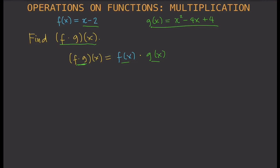How do we find f times g of x given that f(x) is x - 2 and g(x) is x² - 4x + 4? Let's substitute. f of x is x - 2, so we're going to change that into (x - 2), then multiply it with g of x, which is (x² - 4x + 4).